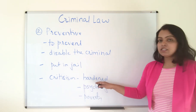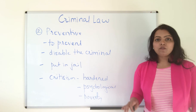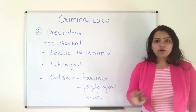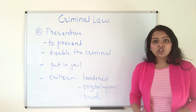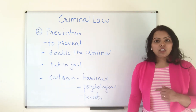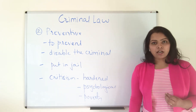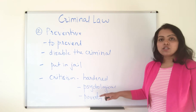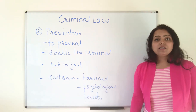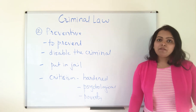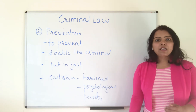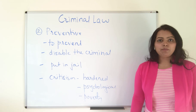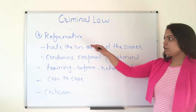Preventive theory is criticized because it is not helpful in the case of hardened criminals who repeat crime again and again — once they come out of jail, they commit the crime again. Second, it is not helpful in psychological crimes, as treatment is needed rather than punishment. For crimes committed out of poverty, as long as poverty exists, the person will come out of prison and commit crime again — so giving job opportunities or employment is a better approach.